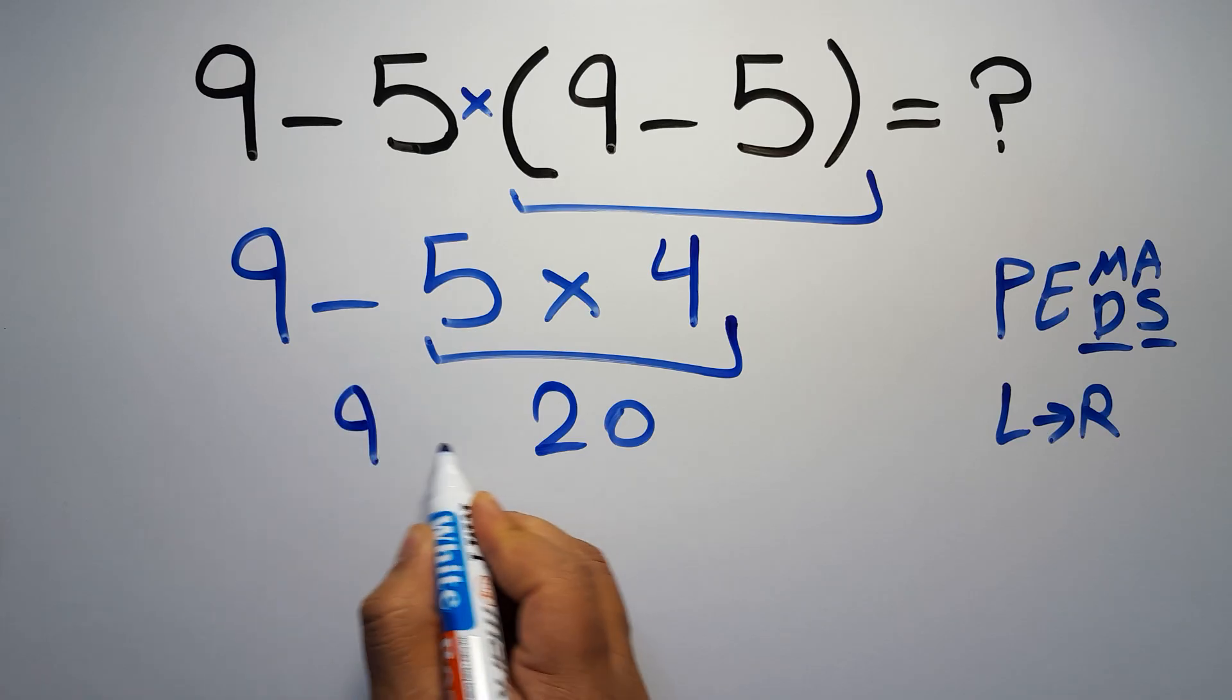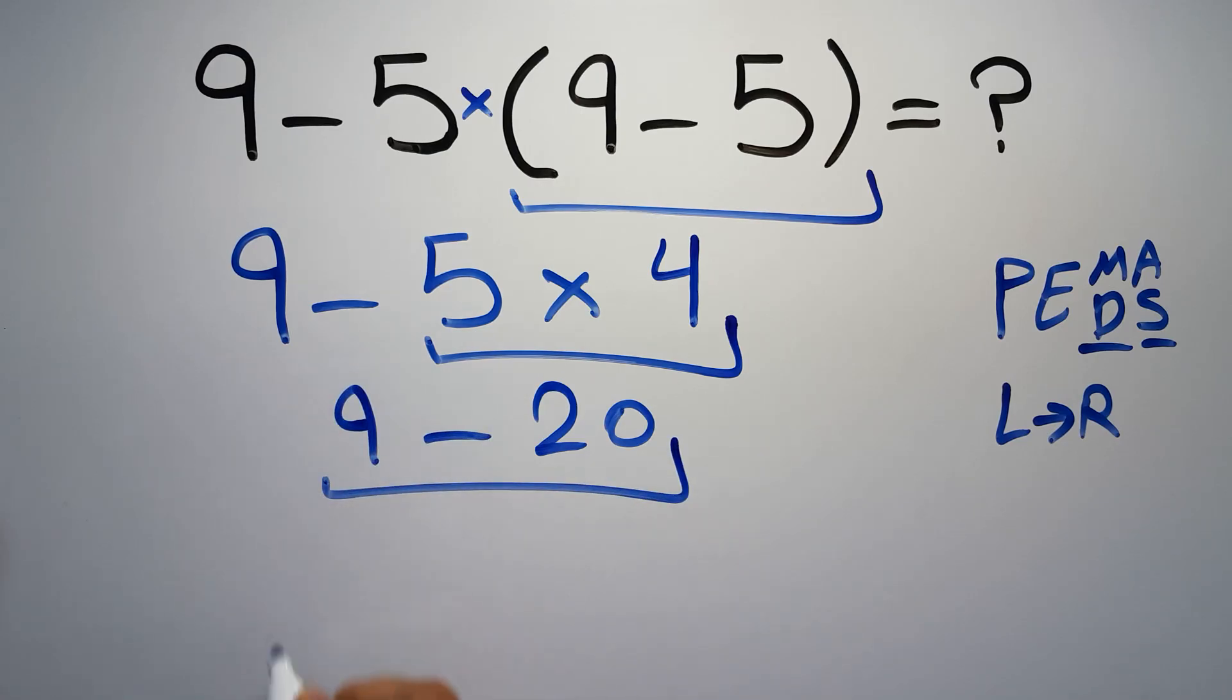So 9 minus 20 which equals negative 11. And this is our final answer to this problem.